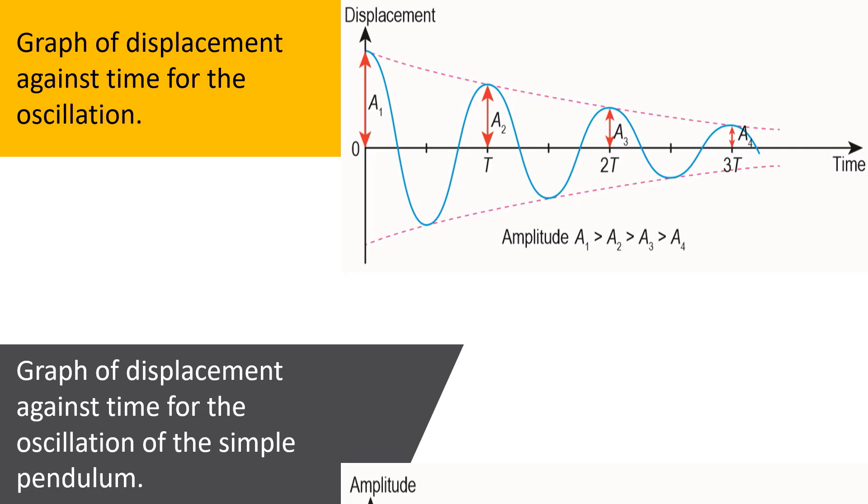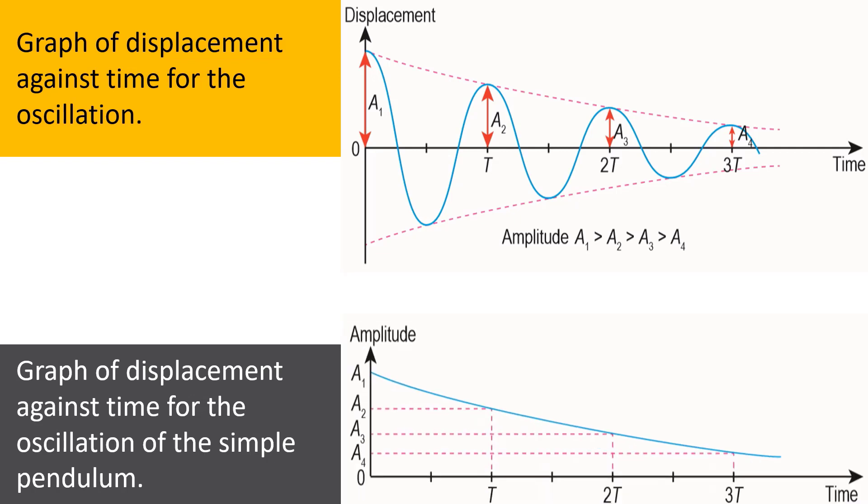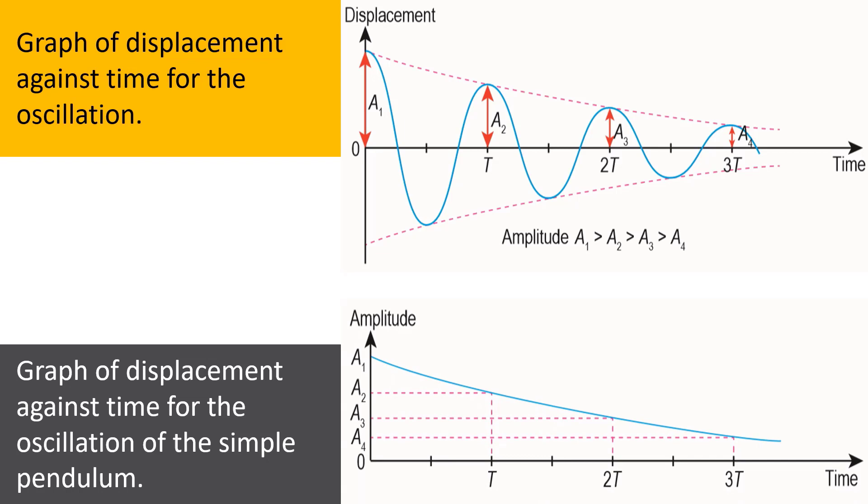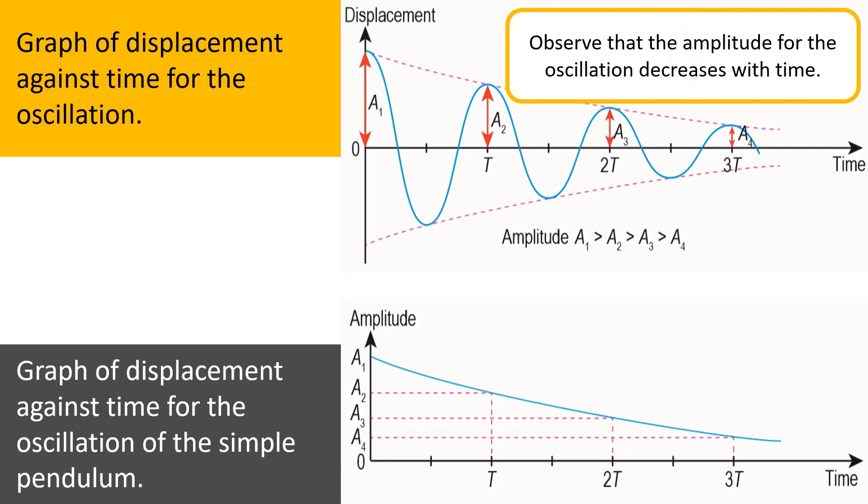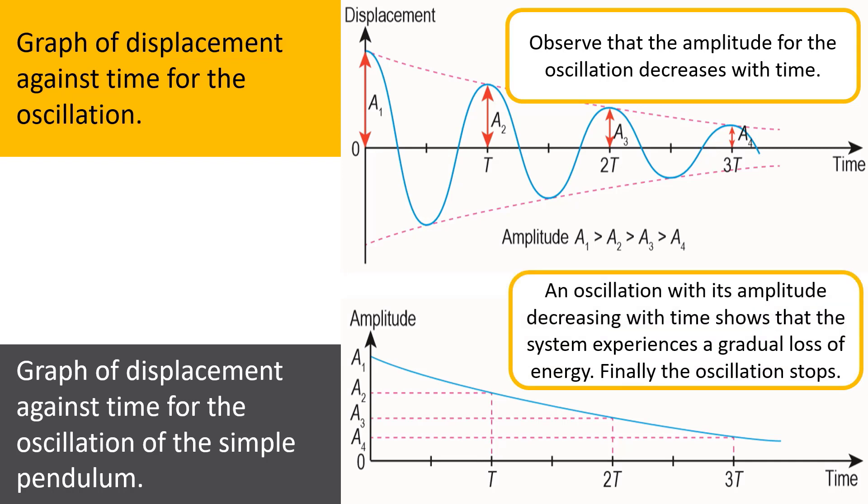The graph of displacement against time for the oscillation of the simple pendulum shows that the amplitude decreases as time increases. Oscillation with its amplitude decreasing with time shows that the system experiences a gradual loss of energy. Finally, the oscillation stops. This answers the question at the beginning of the session, remember?